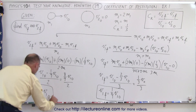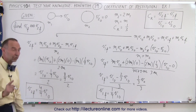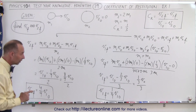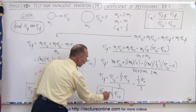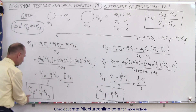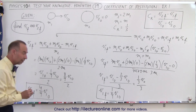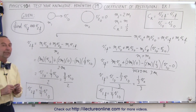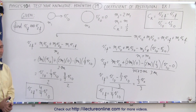And there are our two final velocities in terms of their initial velocities. v1 final is one-ninth v1 initial. v2 final is four-ninths v1 initial. And that is how that's done.